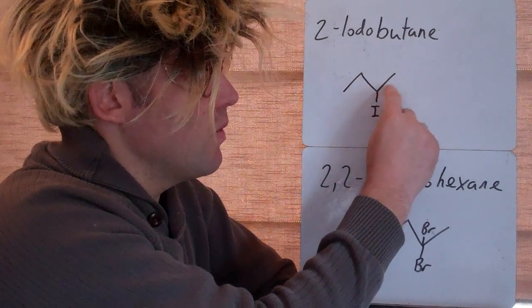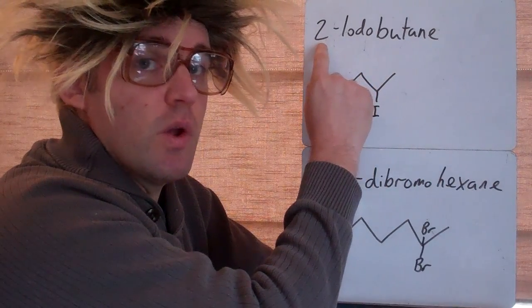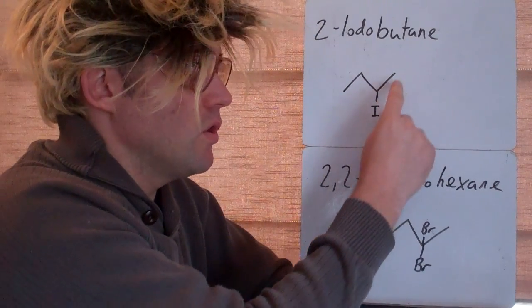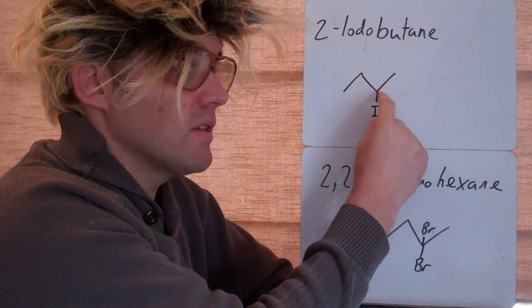So because it could have been in position 2 or 1, we need to put the 2 there to show that it's coming on carbon 2. It's carbon 2 because we count from the side that gives it the lowest number.